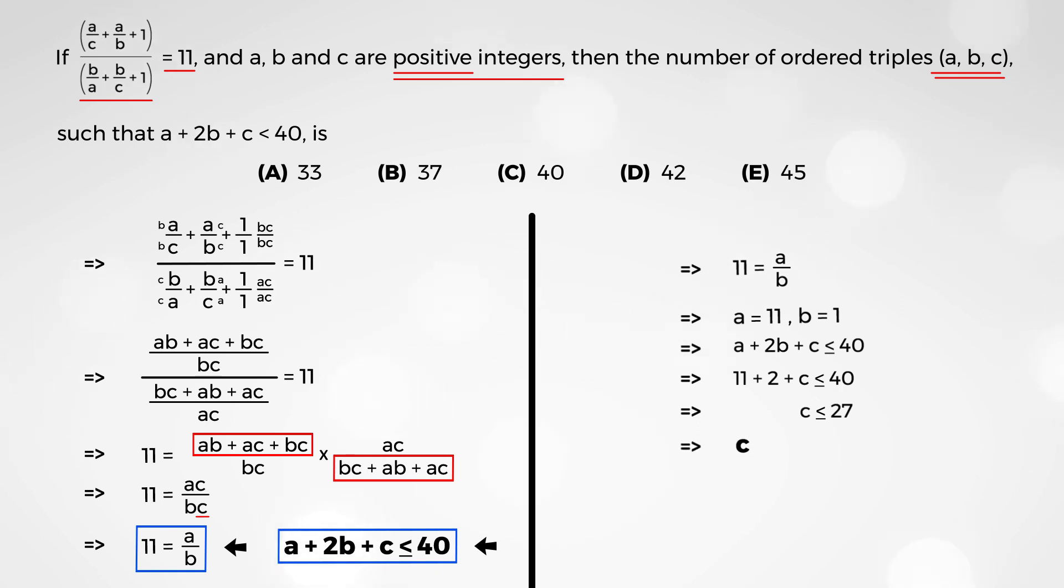So, that essentially means that c is any integer, 1, 2, 3, all the way up to 27. And the ordered triples are of the form 11 for a, 1 for b, and some c value between 1 and 27. So, 11, 1, 1, or 11, 1, 2, all the way up to 11, 1, 27.